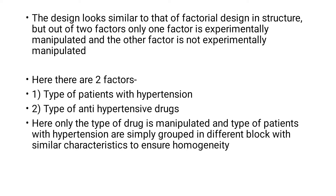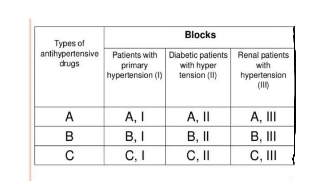The factor being manipulated is the types of antihypertensive drugs. We can see this in tabular form: the types of antihypertensive drugs are labeled A, B, and C — three types grouped accordingly. On the other axis, we have Block 1 (patients with primary hypertension), Block 2 (diabetic and hypertension patients), and Block 3 (renal patients with hypertension).